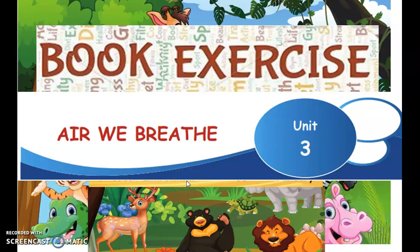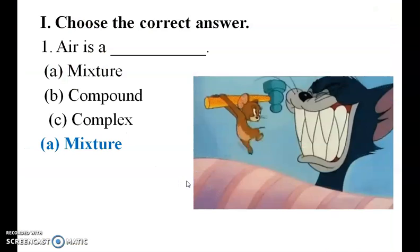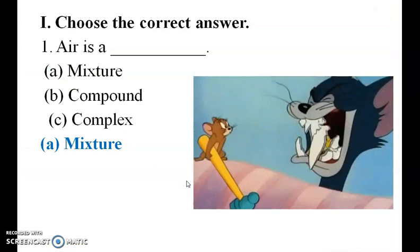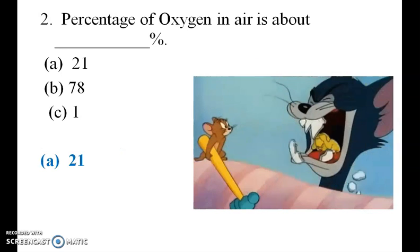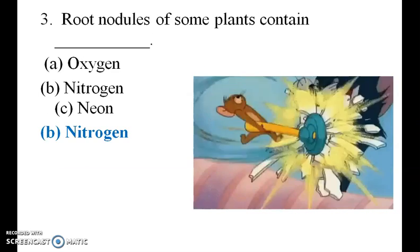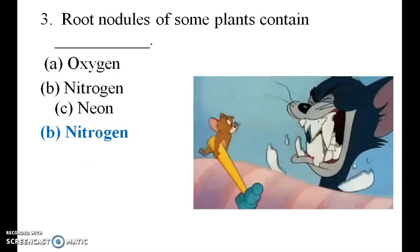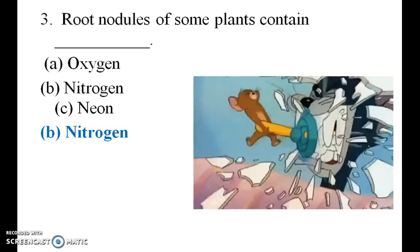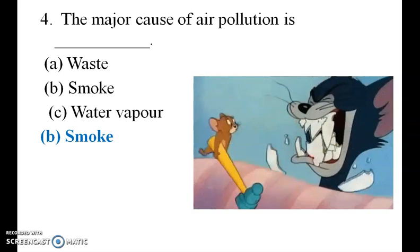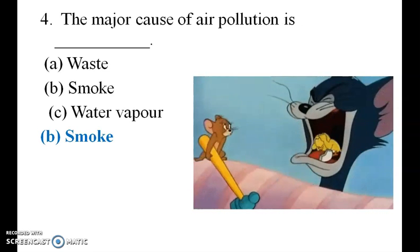Good morning students. Let us see the book exercises of Unit 3, that is 'Air We Breathe.' Air is a mixture. The percentage of oxygen in air is 21%. Root nodules of some plants contain nitrogen. The major cause of air pollution is smoke.